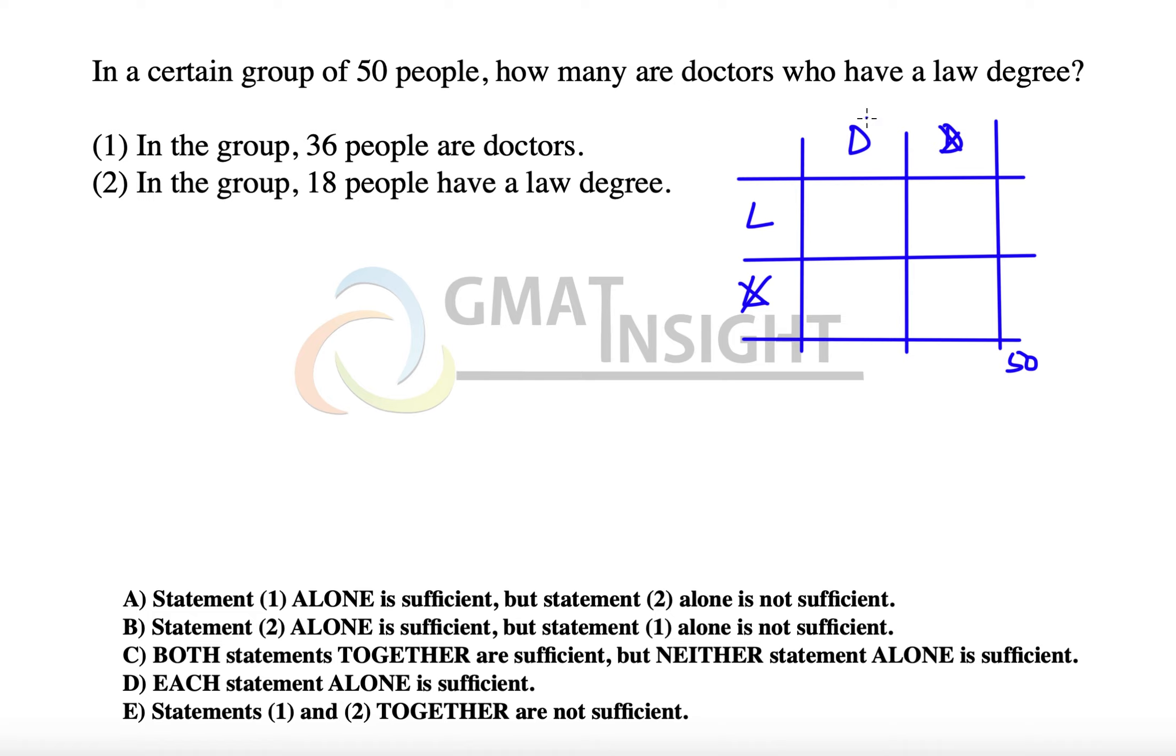How many are doctors who have a law degree? If x comes here, the question is about finding the value of x. Let's check these statements now. The first statement says that in the group 36 people are doctors.